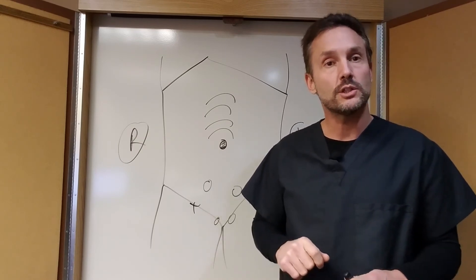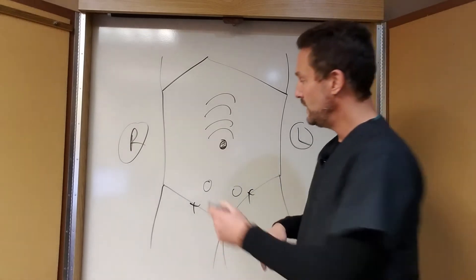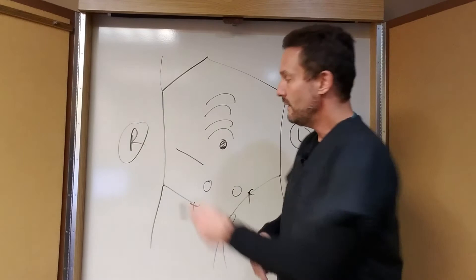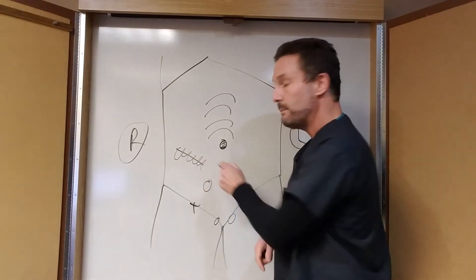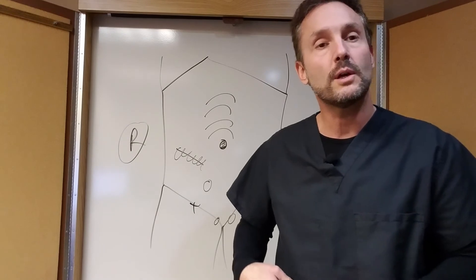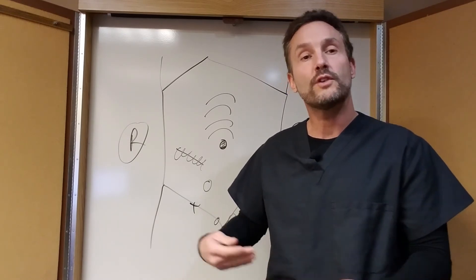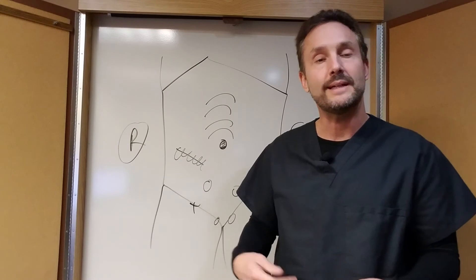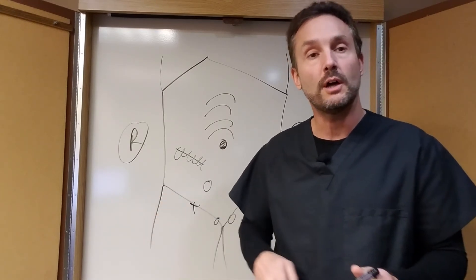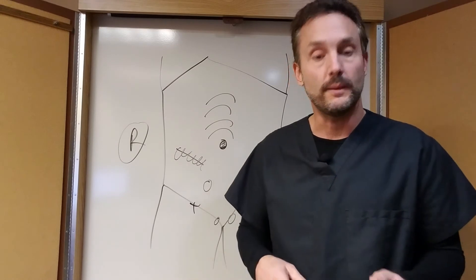Last hernia is called an incisional hernia. So if you had surgery anywhere on your body, they cut through that muscle tissue. They sew it back up when they're done, but that muscle tissue isn't necessarily as strong as the rest of your muscle was before it was cut. So over time that can stretch out and you can get an incisional hernia as a down the road complication of having had surgery.